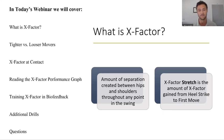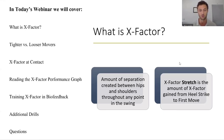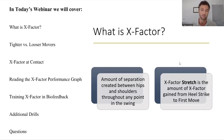We'll start off with what is X-Factor. There's actually a difference between X-Factor and X-Factor Stretch. X-Factor is the amount of separation created between hips and shoulders throughout any point in the swing. When you see this represented as a negative number, that's telling us that the torso is more internally rotated than the pelvis. X-Factor Stretch is the amount of X-Factor gained from heel strike to first move — just that short period of time — and we're seeing how much separation they're creating between those two points.